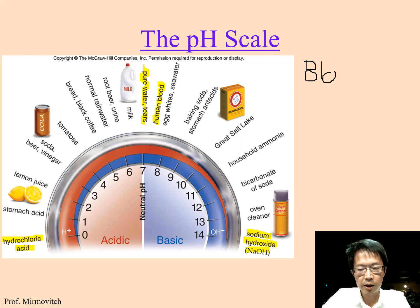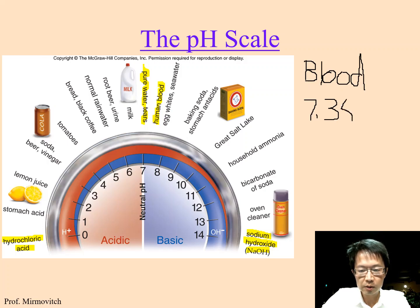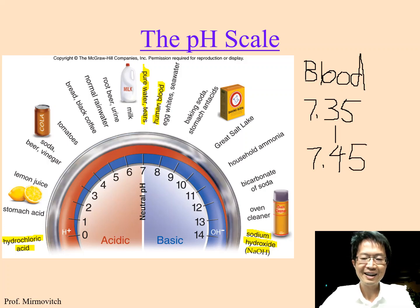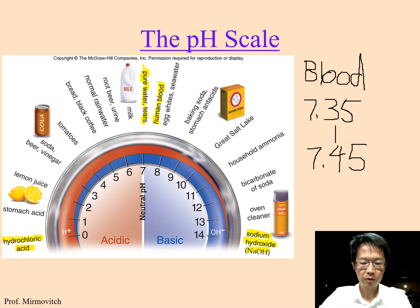This is something I want you to memorize, because some of you will continue to take anatomy and physiology, so the pH of your blood is important to know. Let me highlight this to emphasize it: human blood is 7.35 to 7.45. Our blood — or our body fluid in general — is slightly basic.